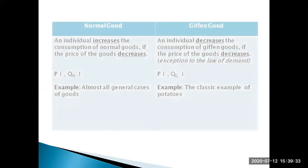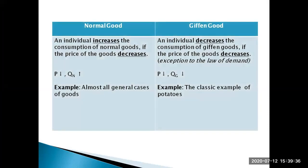Before we move to the topic, let's first concentrate on the textbook difference between normal good and giffen good. In the case of a normal good, an individual increases the consumption of normal goods if the price of the good decreases. For example, every month you buy a toy worth ten dollars, and if the price drops to five dollars, you will probably start buying two of those toys every month. As the price fell, you increased consumption — that toy is essentially a normal good to you. Almost all general cases of goods fall under this category.